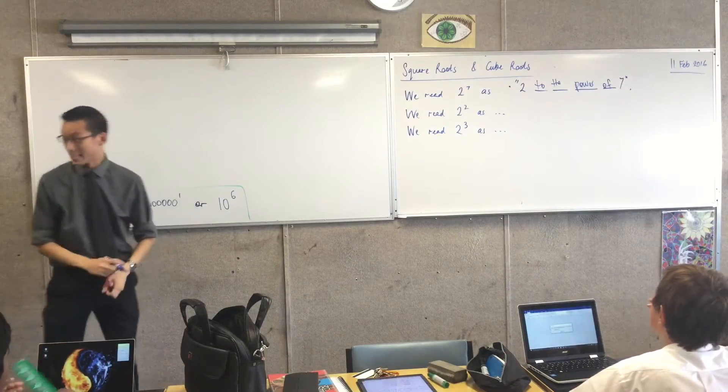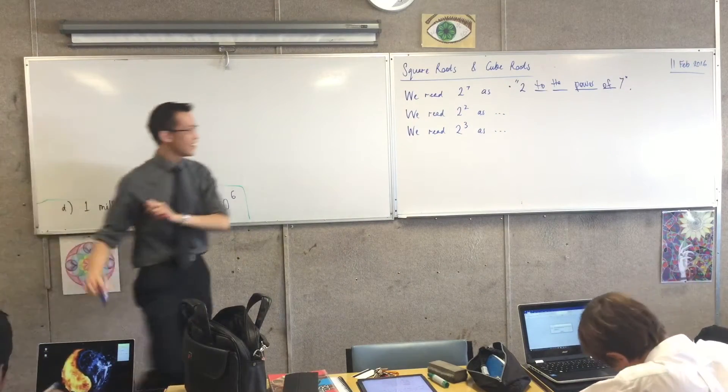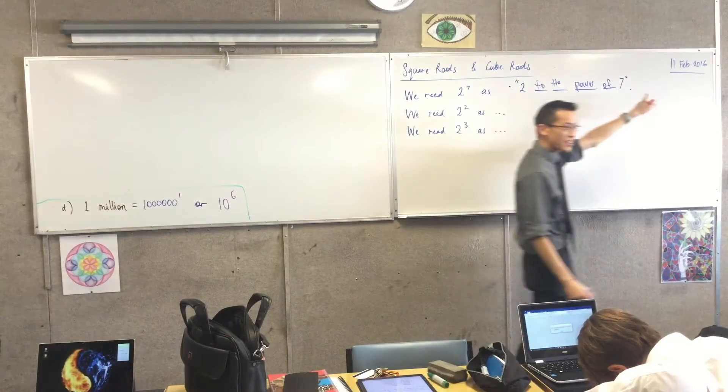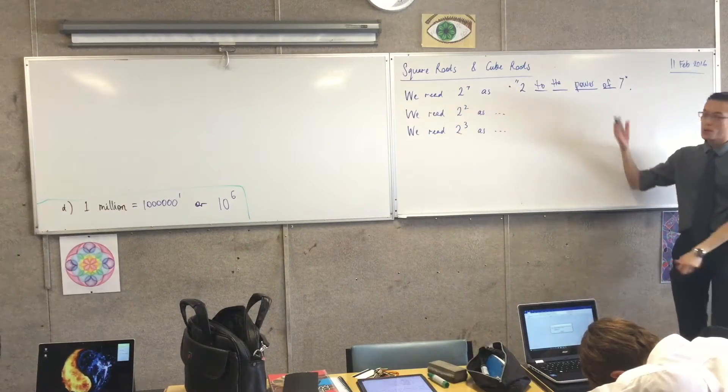Actually, I reckon we could do it all together, right? We read that as to the power, that's what that thing is called, that number there, of seven, right? So, seven is the power, so two to the power of seven. Yes, Aidan? Do we write this down? Yes, please. So, it's on the board, it should be in your book. So, that's great. We read two with a seven up there as two to the power of seven.